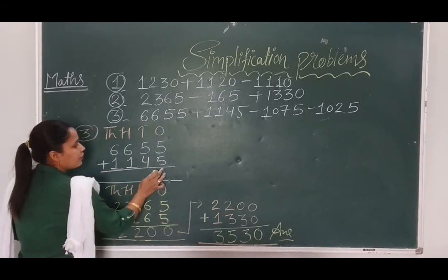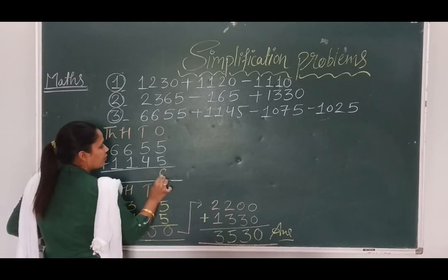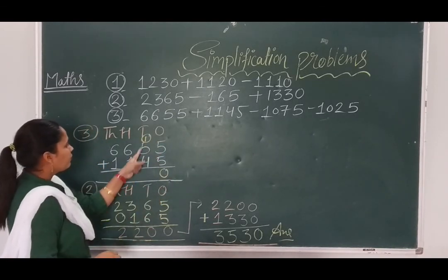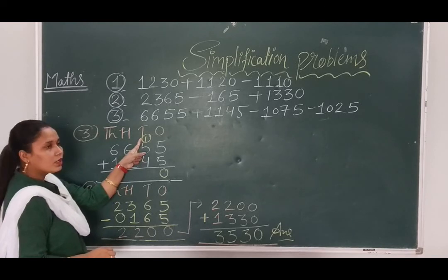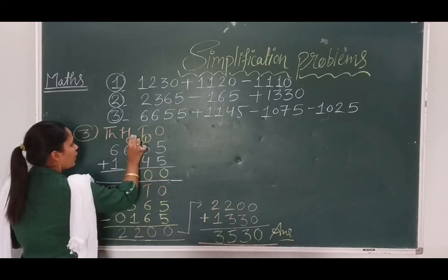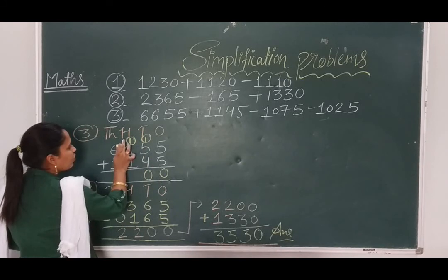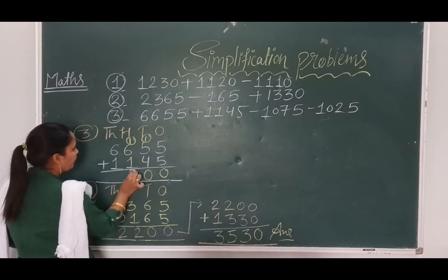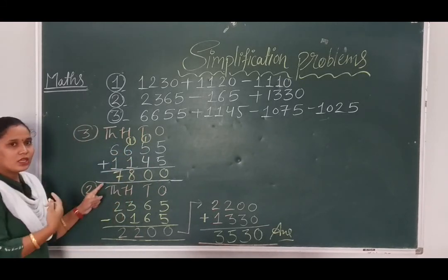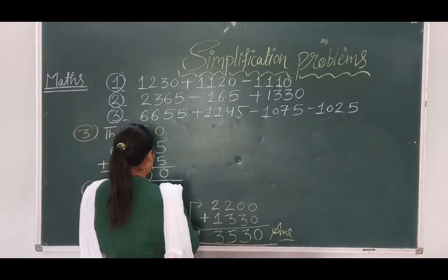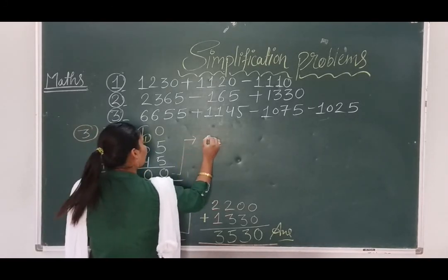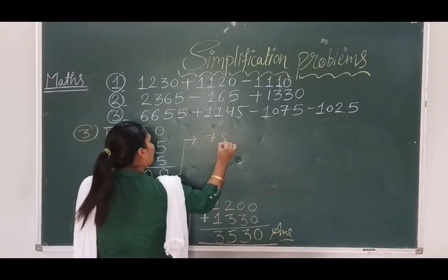5 plus 5 is 10 — write 0, carry 1. 5 plus 1 is 6, plus the carry 1 makes 7, plus the next 1 makes 8 — carry 1. 6 plus 1 is 7, plus carry 1 is 8. 6 plus 1 is 7. We write this answer on the next line: 7800.